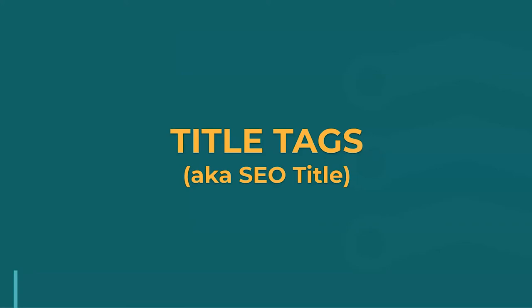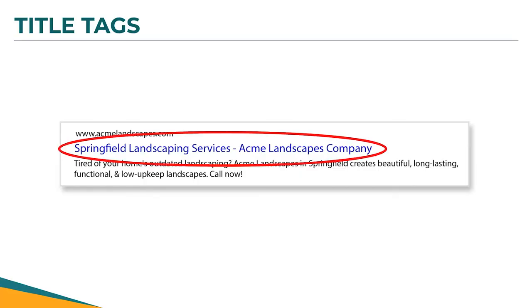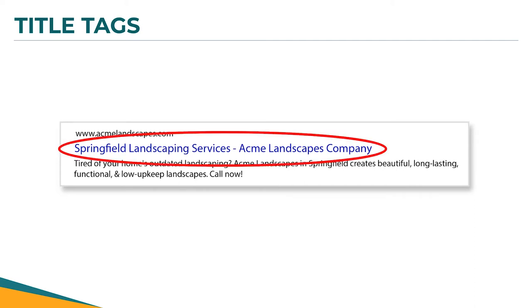Next are your titles — technically known as title tags, but you'll most likely see them called your 'SEO title.' These are what show up in the search engine results. When you Google your own website or your industry and you see your search result, the title tag is that clickable headline. Most businesses, if they're lucky, do their homepage and then leave every other page empty — in that case, Google just picks from your website content.